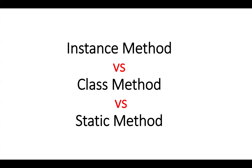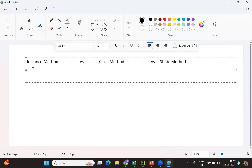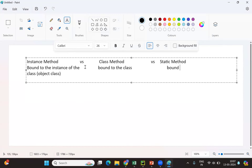Hello everyone, this is Venu Gopal. Today in this session we are going to cover instance method versus class method versus static method. Instance methods are bound to the instance of the class, that is, the object of the class. Whereas class methods and static methods are both bound to the class directly, not to the object of the class.